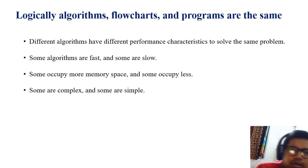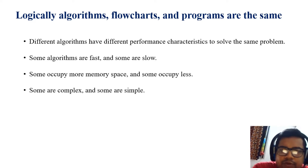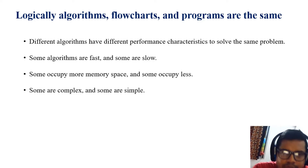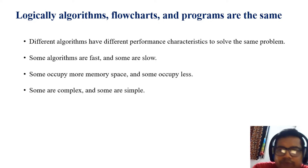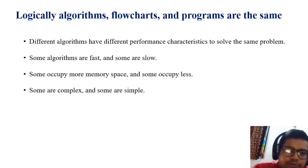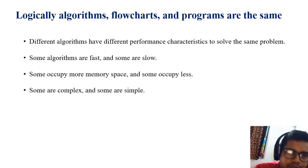Logically, algorithm, flowchart, and program are the same. Different algorithms have different performance characteristics to solve problems. Some algorithms are fast, some are slow, some occupy less memory, some occupy more memory, some are complex, and some are simple.